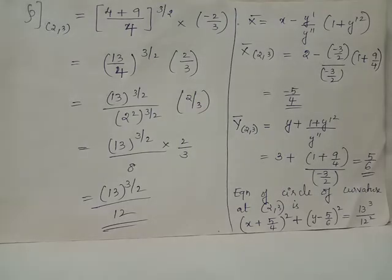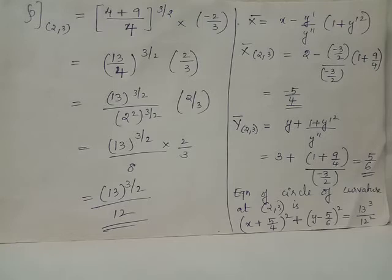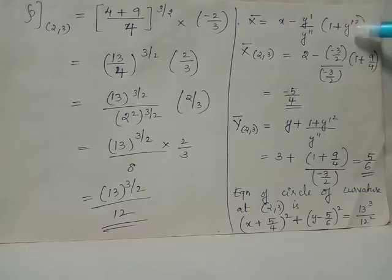Now we have to find out the coordinates of the center of curvature. We have x̄ equals x minus y' divided by y double dash, multiplied by (1 plus y' squared). x̄ at the point (2,3) is obtained by giving x equals 2, y equals 3, y' equals negative 3 by 2, and y double dash equals negative 3 by 2 in the standard expression of x̄. Note that y equals 3 is not used anywhere. On simplification, x̄ at point (2,3) takes the value negative 5 by 4.